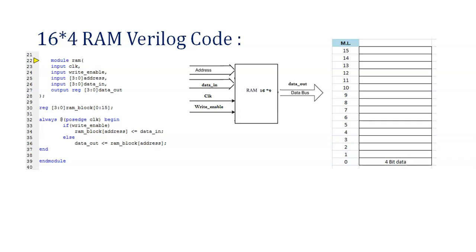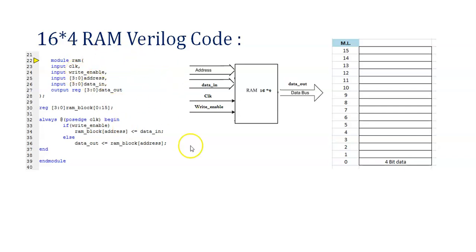Here you are able to see the Verilog code for RAM. The module is named RAM with end module at the close. Clock is declared as input, write_enable as a single-bit input, and address as a 4-bit input [3:0] since we have 16 memory locations. Data_in is also a 4-bit input [3:0]. For behavioral modeling style, the output data_out must be declared as reg, which is why reg is mentioned.